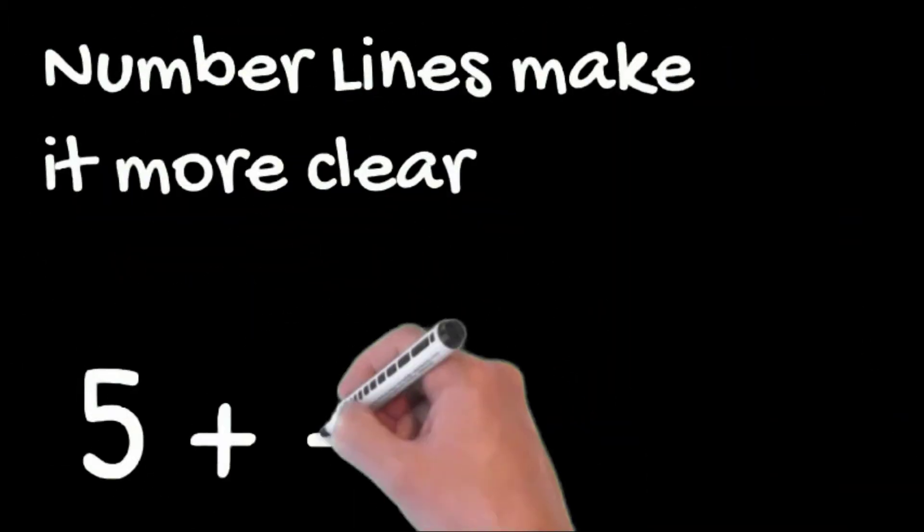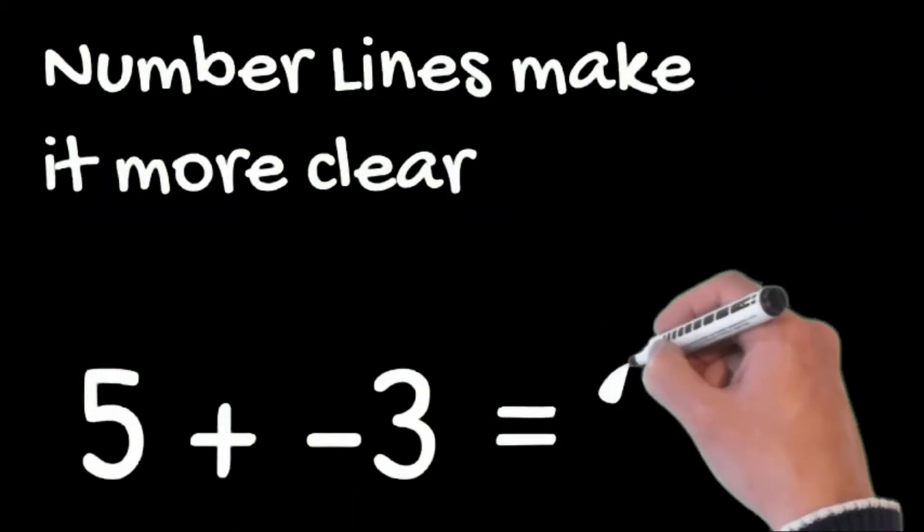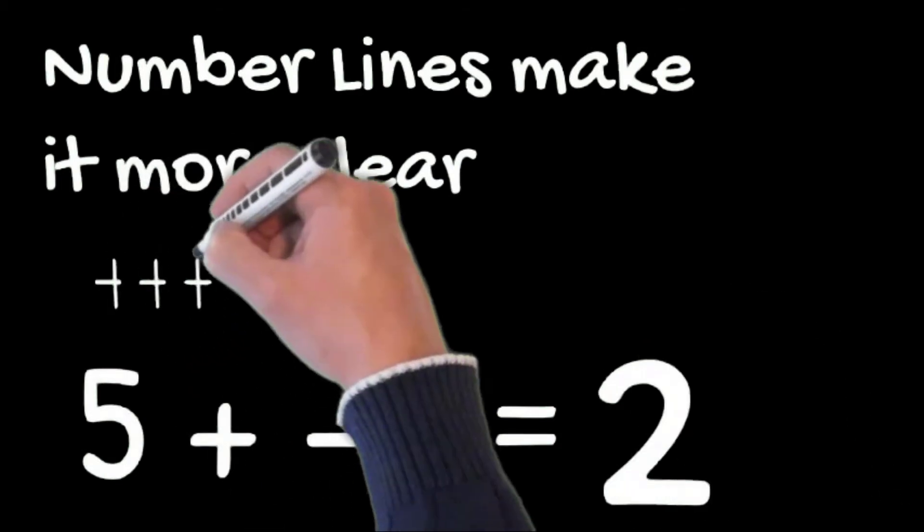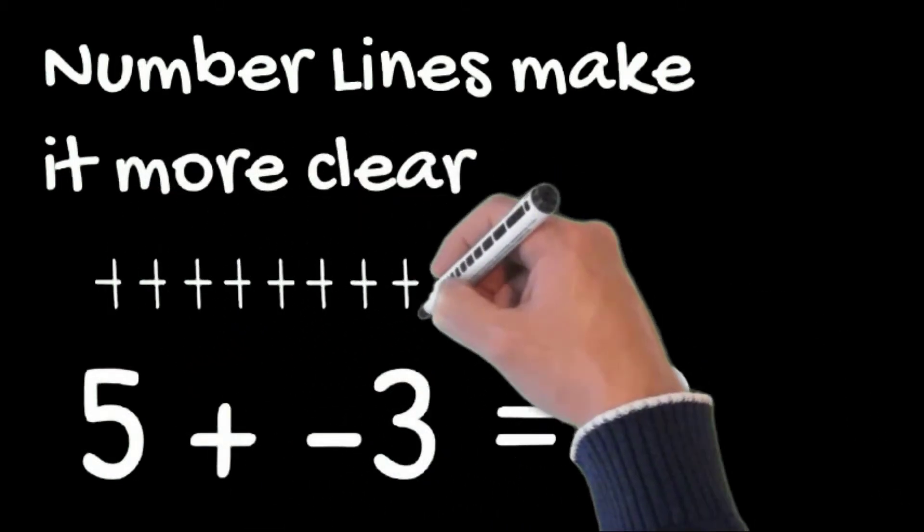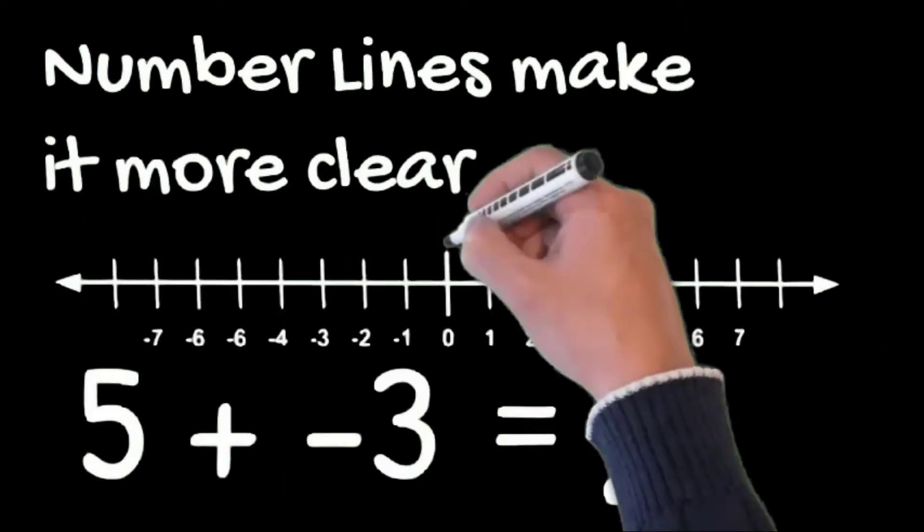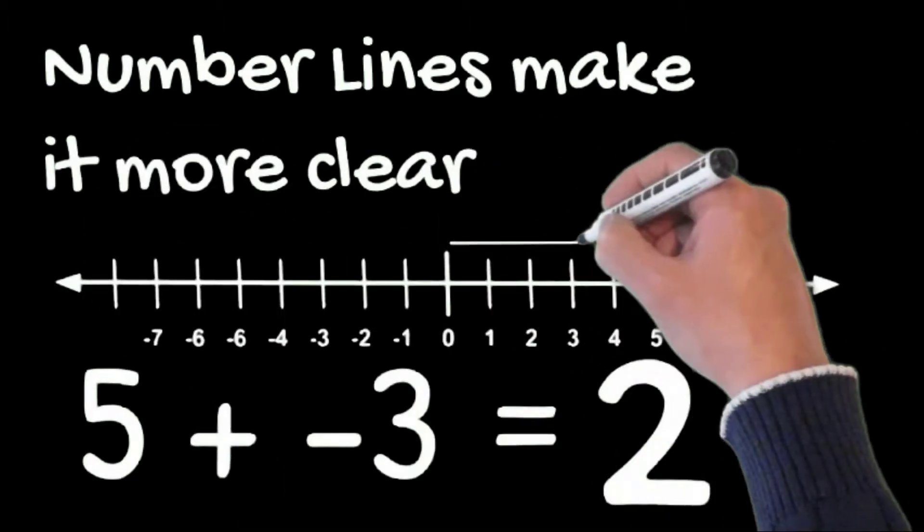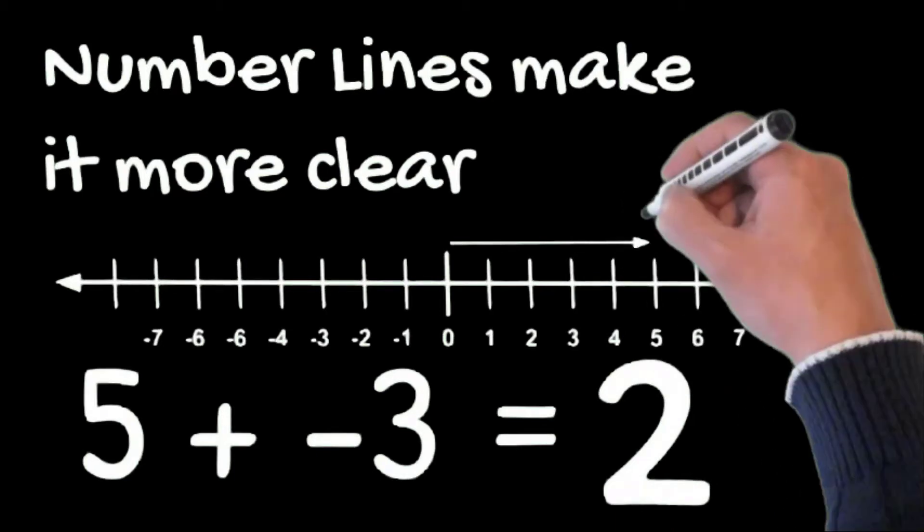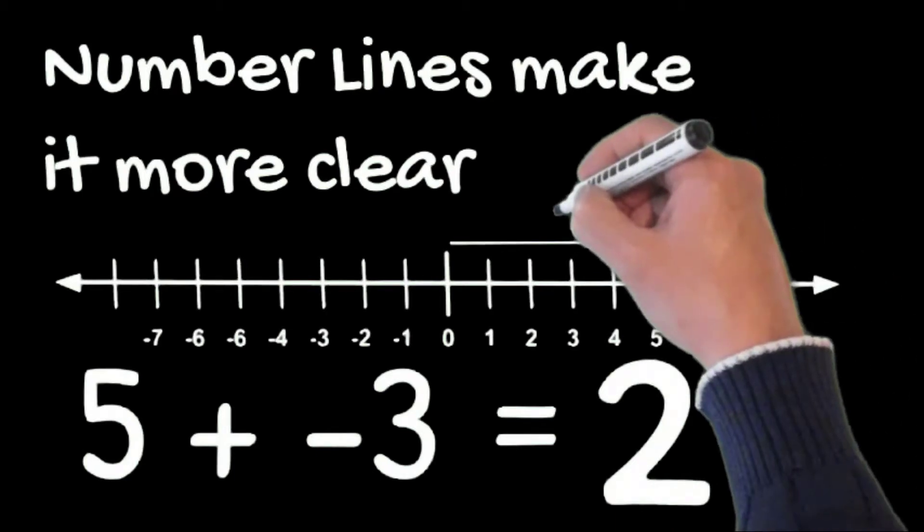Number lines make it a little more clear. Let me show you this number line here. When you have a number line, you need to figure out where 0 is and then your positive numbers are to the right and your negative numbers are to the left of 0. So you can see here we moved 5 to the right and left 3.